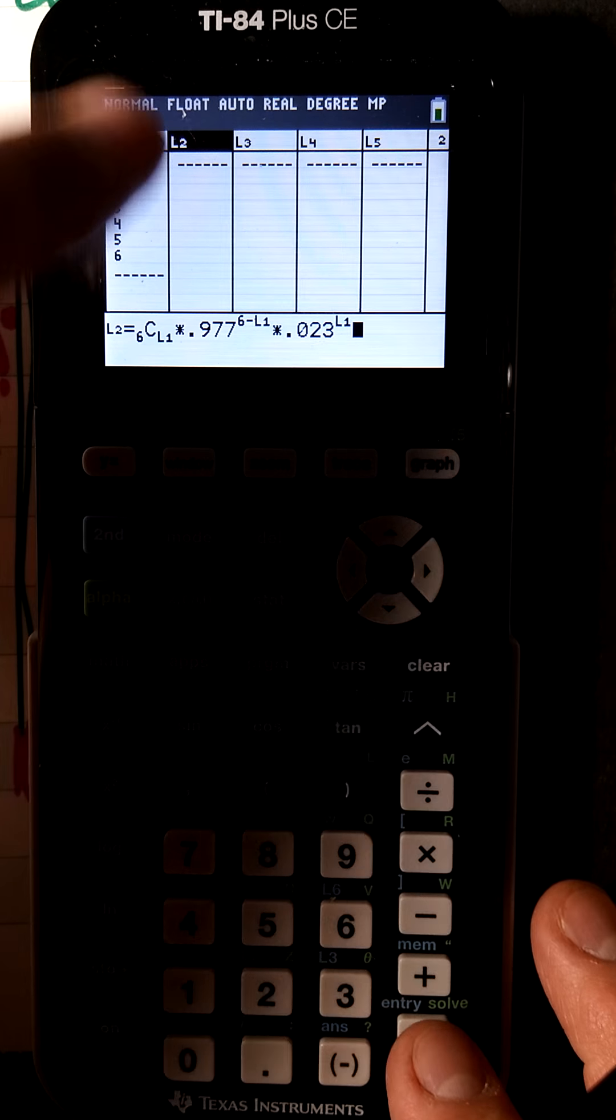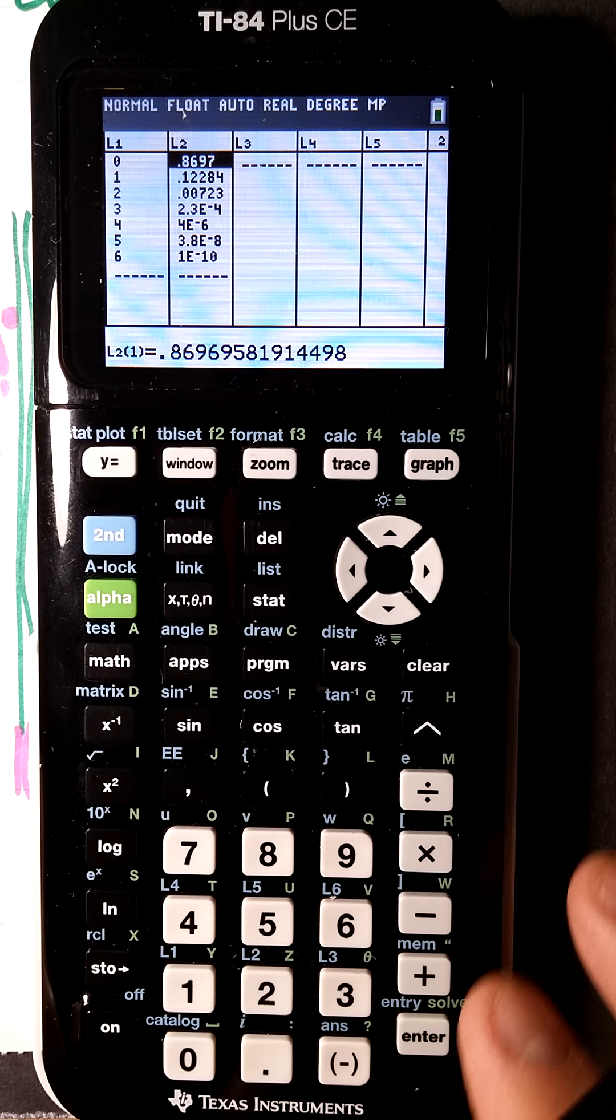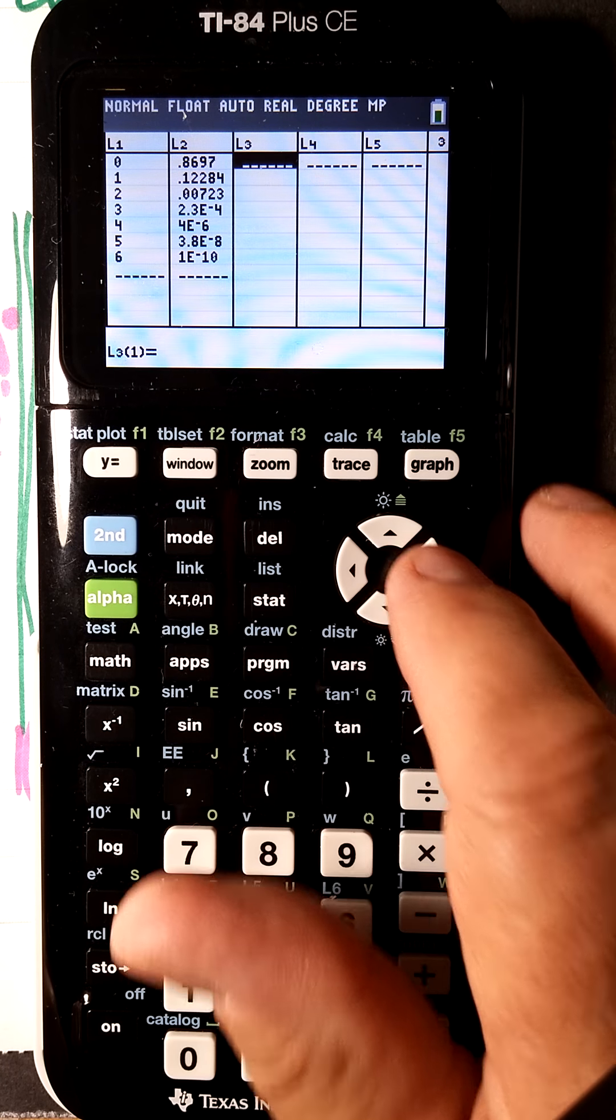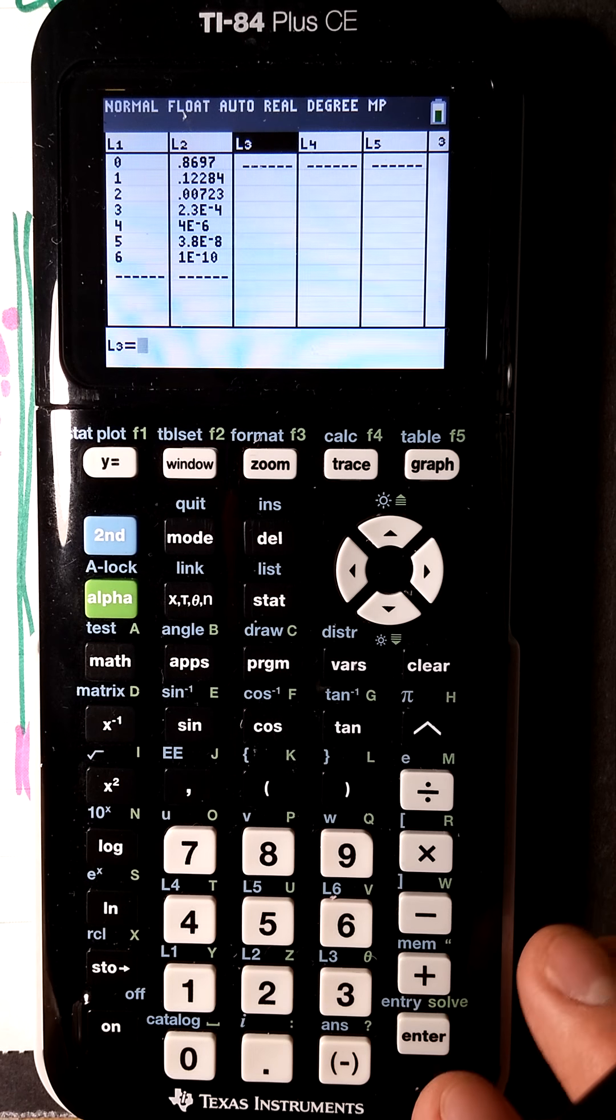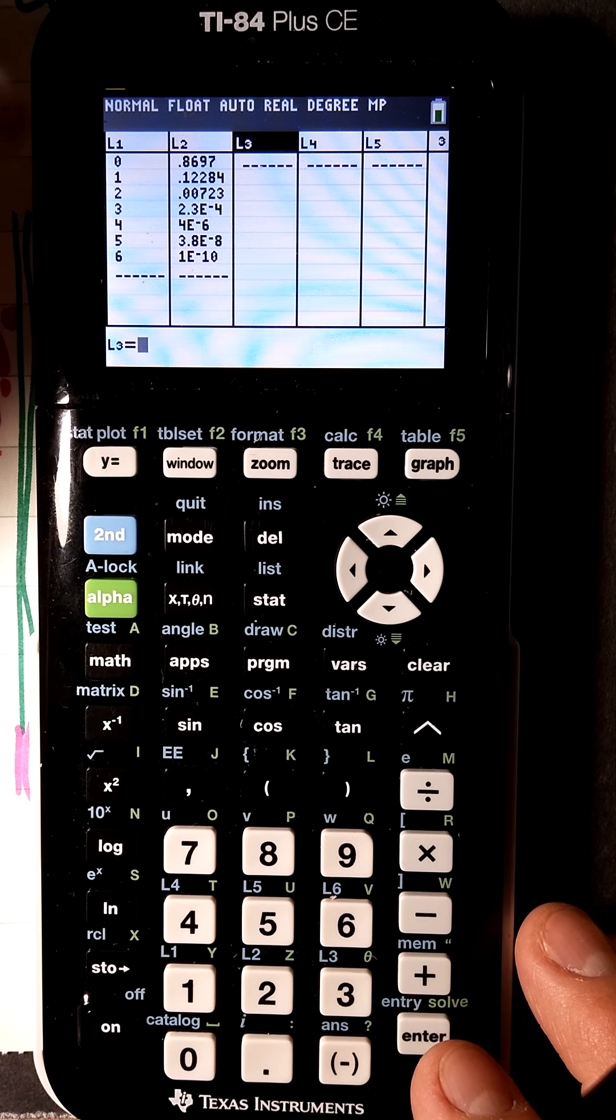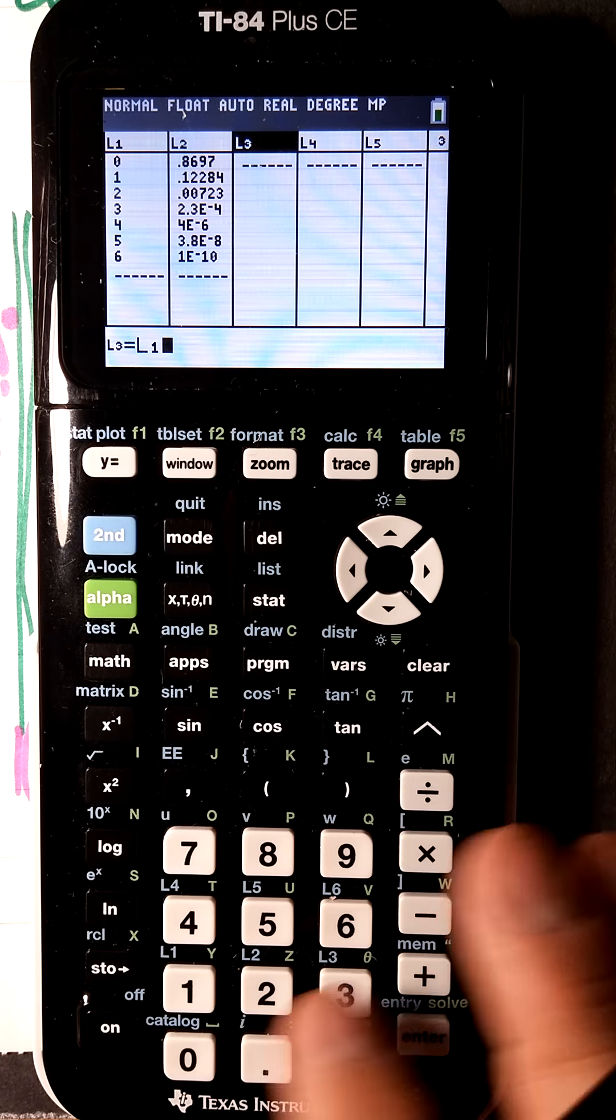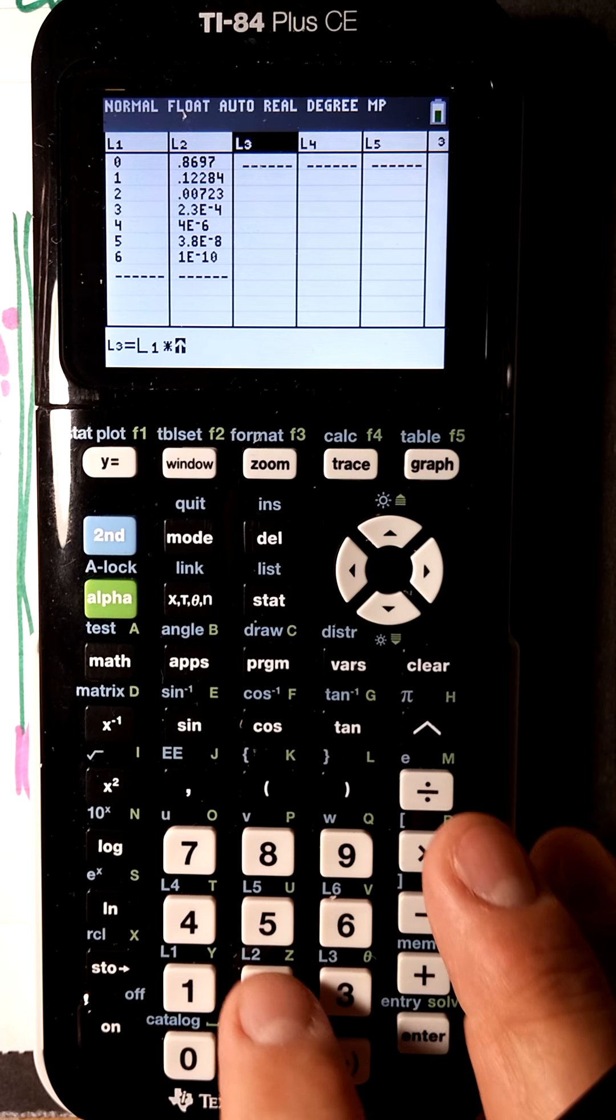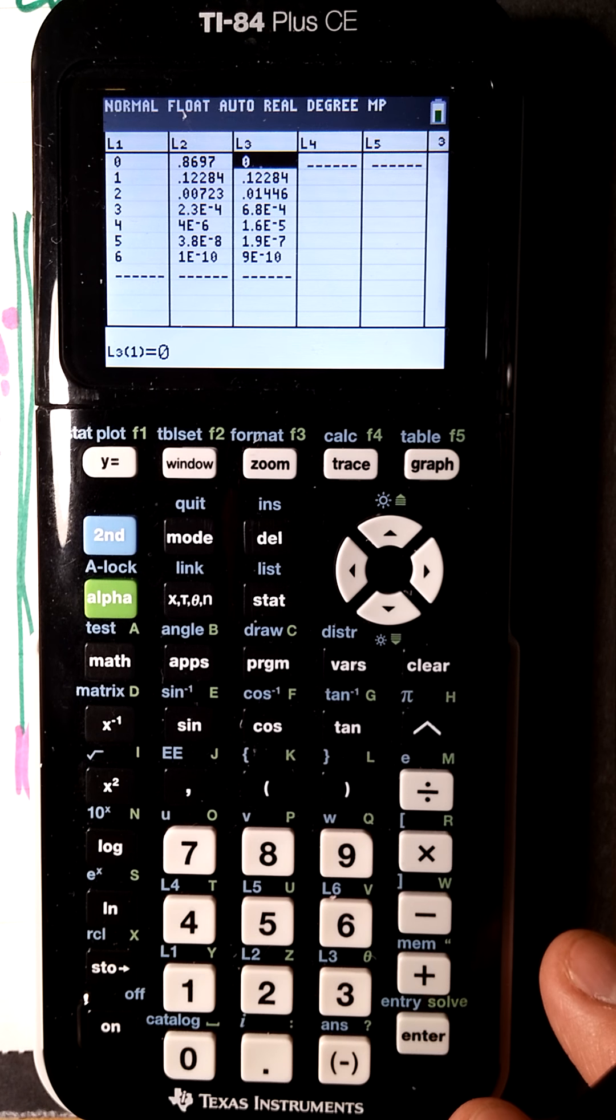Now for L3, go up to the name, press enter, and we want L1 times L2. That's all that is - second 1 times second 2 and it'll fill all those in. These are the numbers I was writing down: 0.122840, 0.0144, etc.